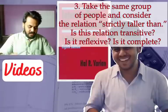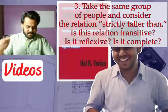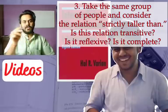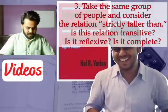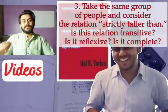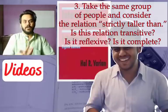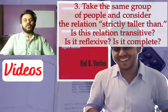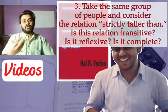Next, take the same group of people and consider the relation 'strictly taller than.' Is it transitive? Yes, again — if Steve is strictly taller than John, and John is strictly taller than Jimmy, then obviously Steve is strictly taller than Jimmy. Now is it reflexive? Reflexive means can you have that relationship with yourself. Definitely not — you cannot be strictly taller than yourself, so it's not reflexive. Is it complete? No, it is not complete, because two people could have the same height, so you cannot apply the relation 'strictly taller than' in that case.